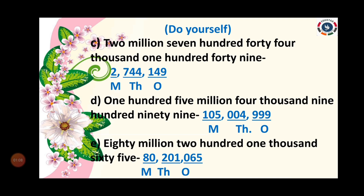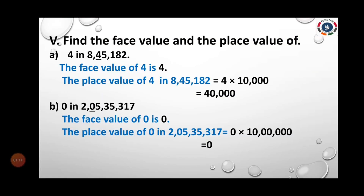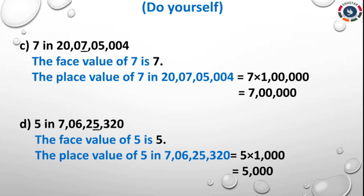Check your answer thoroughly. And Domulator 5 — find the face value and the place values. I already gave two sums with the answer; the next two you did yourself. So: 7 in 20,07,5004 — the face value of 7 is 7. The place value of 7 in 20,07,5004 is 7 in the 1 lakh place, so 7 × 1 lakh = 7 lakh.